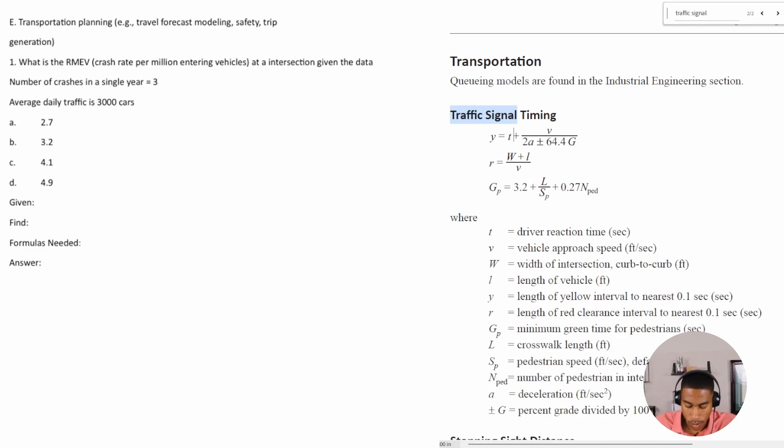So number one says what is the RMEV, that's the crash rate per million entering vehicles at an intersection given the data. The number of crashes in a single year is three and the average daily traffic is 3,000 cars.